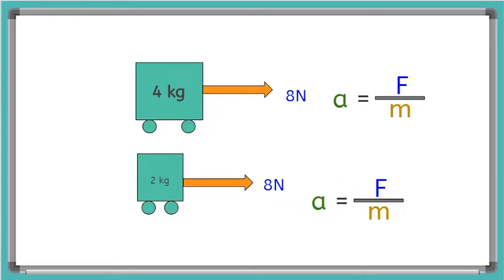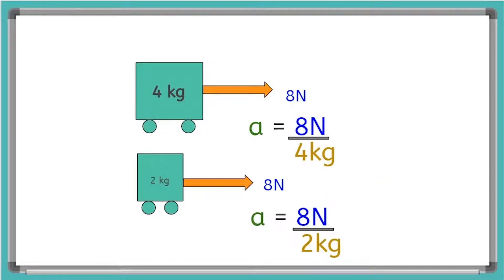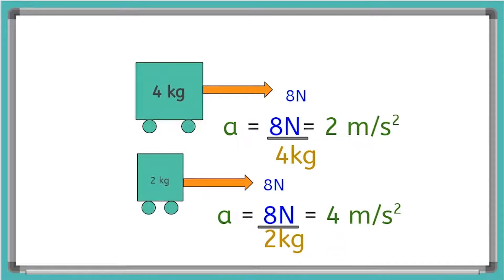The top cart is four kilograms and the bottom cart is two kilograms, and they're both being pulled with a force of eight newtons. Plugging in: the top cart gets acceleration equals eight newtons over four kilograms, and the bottom cart gets eight newtons over two kilograms. The top cart has an acceleration of two meters per second squared and the lighter cart has an acceleration of four meters per second squared. So when the same force is applied to two objects with different mass, the object with lighter mass will accelerate faster.